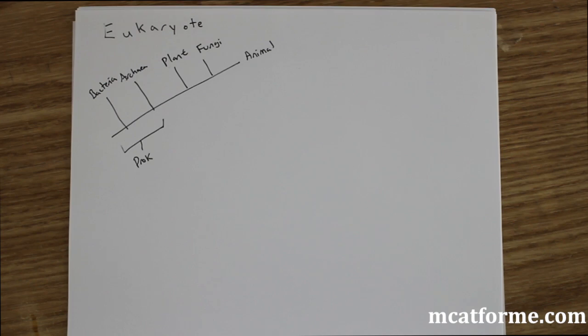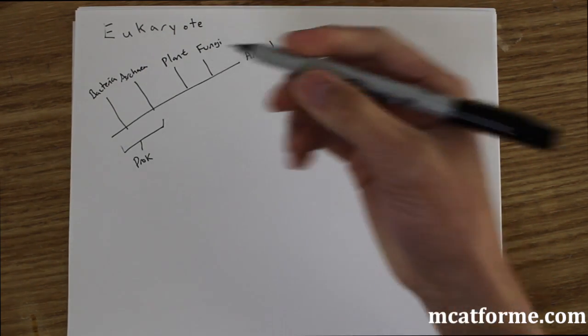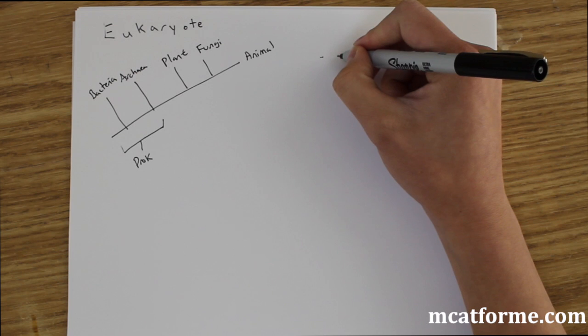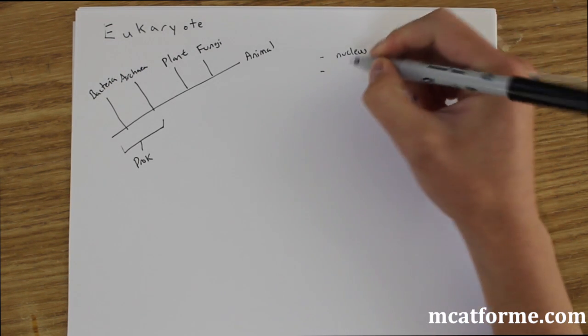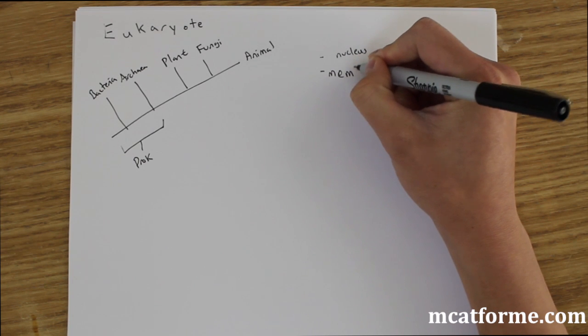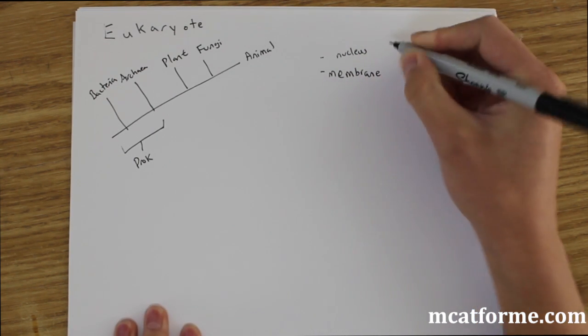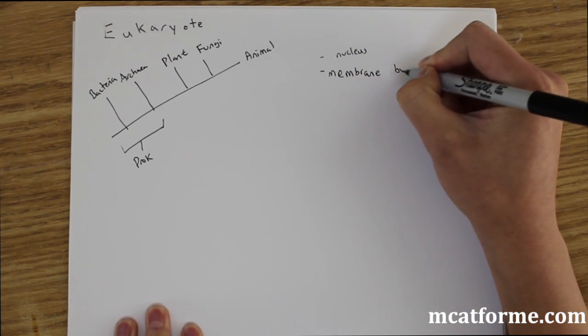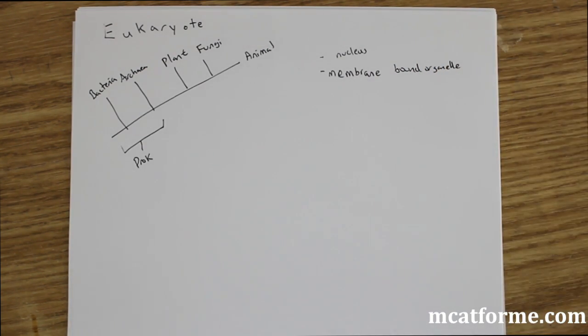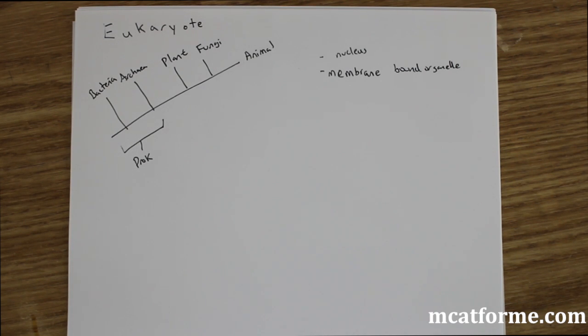That's just something to keep straight so we know what eukaryotes actually are. Some of the distinguishing factors of eukaryotes is that they have a nucleus, and a nucleus is an example of a membrane-bound organelle. So membrane-bound organelle is what we're going to look at. There's quite a few organelles that we will be responsible for the MCAT, but we don't need to know that much into detail.